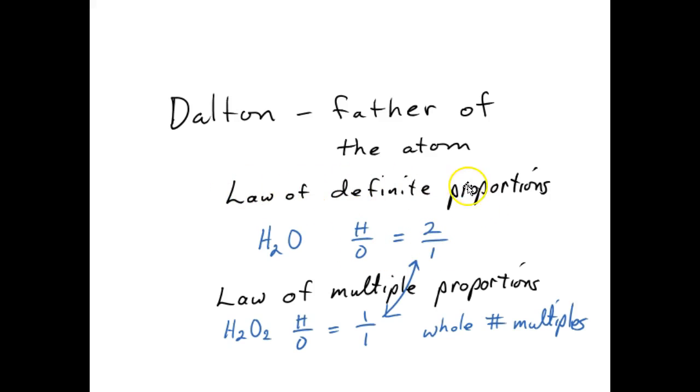He called this general observation the law of definite proportions. Remember, a law in science is something that we observe again and again, but we don't have any explanation for it. He then noticed that if he took another hydrogen oxygen compound and split it into its components, he would get a different ratio, and that this ratio would be a multiple of the previous ratio, a whole number multiple.